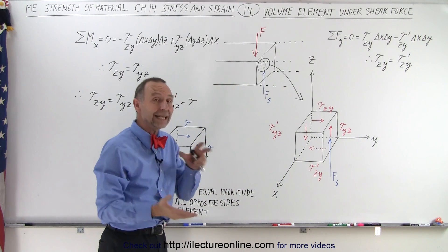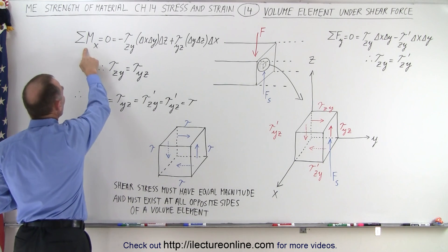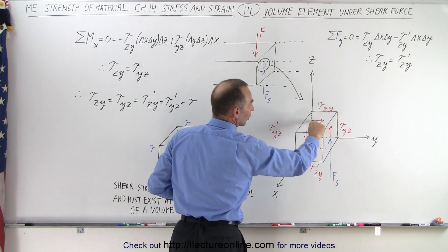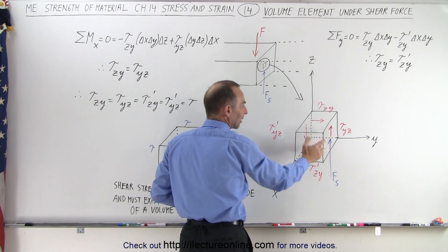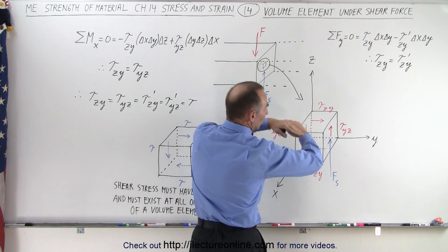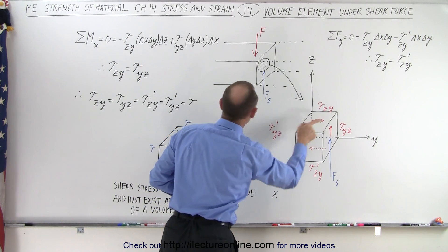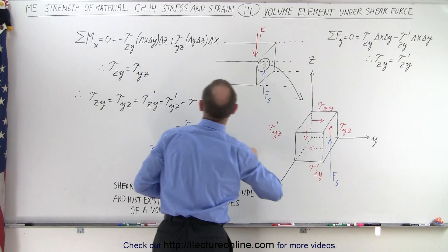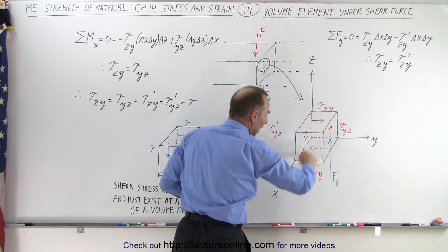In addition to that, there must not be any net moment, otherwise something would simply rotate inside that material. So the moment about the x-axis must also be zero. There's a shear stress on the top side of the volume element which would rotate it about the x-axis, and the shear stress on the other side would also rotate the volume element — in the opposite direction, so they should cancel each other out. Taking the shear stress on the z side in the y direction, multiplied times the area delta x times delta y, gives a shear force, and multiplying that times the moment arm delta z gives a torque or moment about the x-axis.